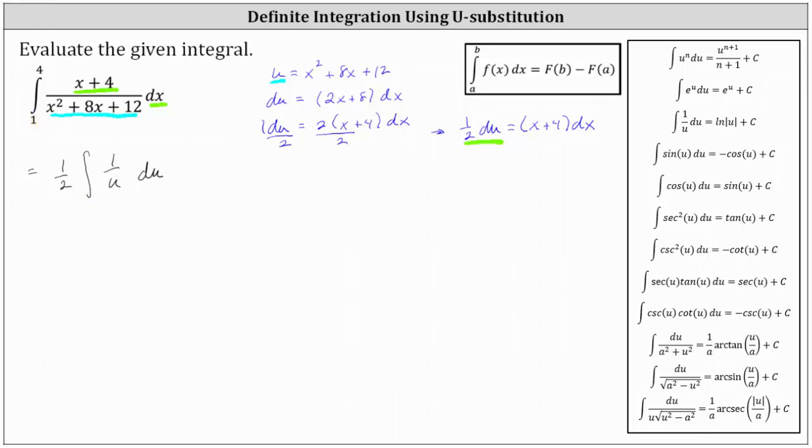Well, when x is equal to 1, u is equal to the square of 1 plus 8 times 1 plus 12, which is 21. 21 is the lower limit of integration for u.